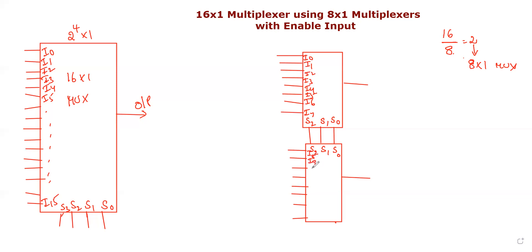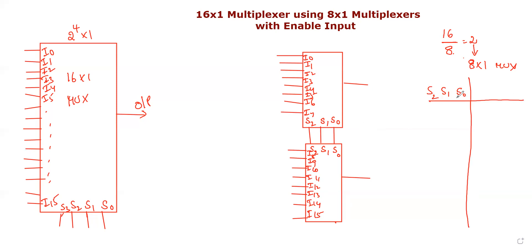The inputs to the second MUX are I8, I9, I10, I11, I12, I13, I14, I15. We will link up the same selection lines across both multiplexers — the same section from the same sequence — with the same S0, S1, S2 selection inputs connected to both.